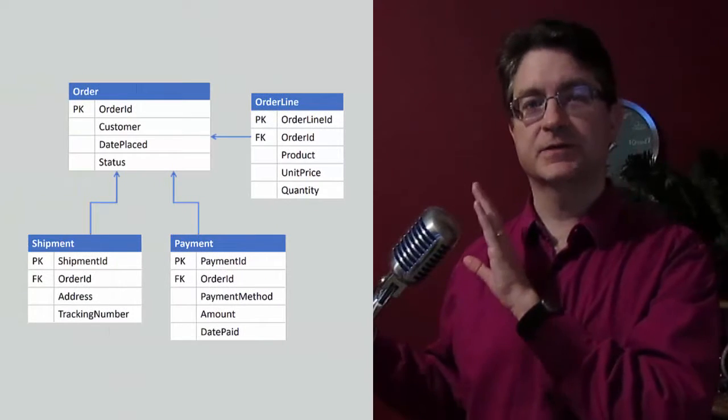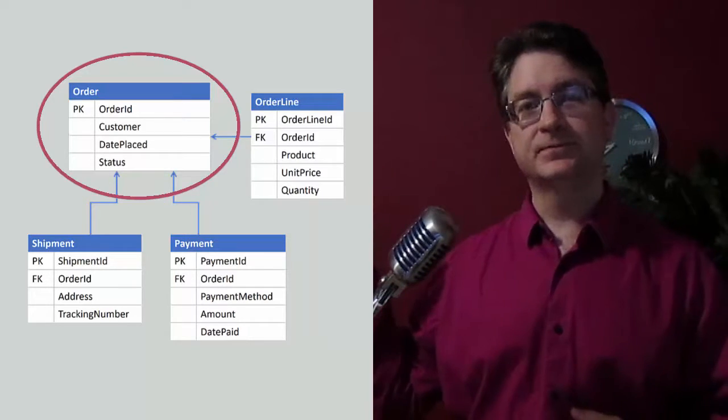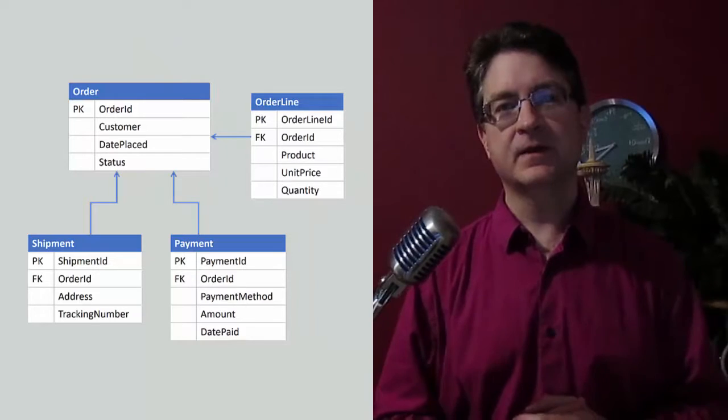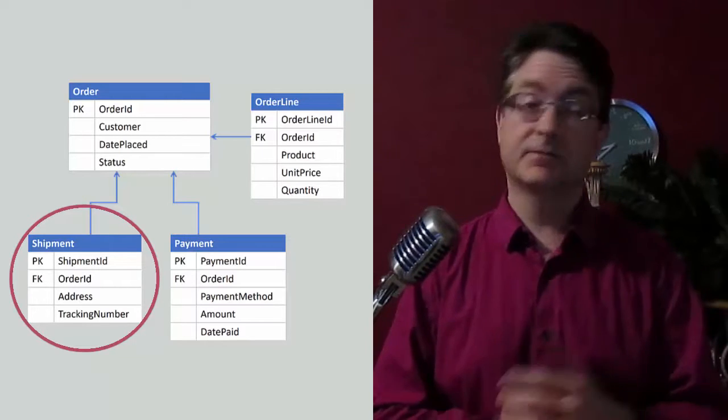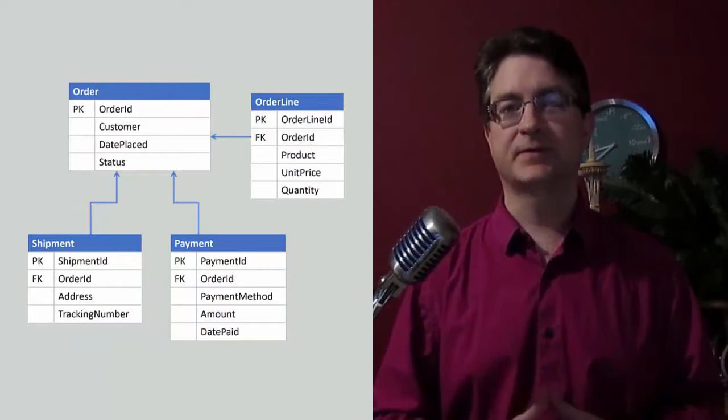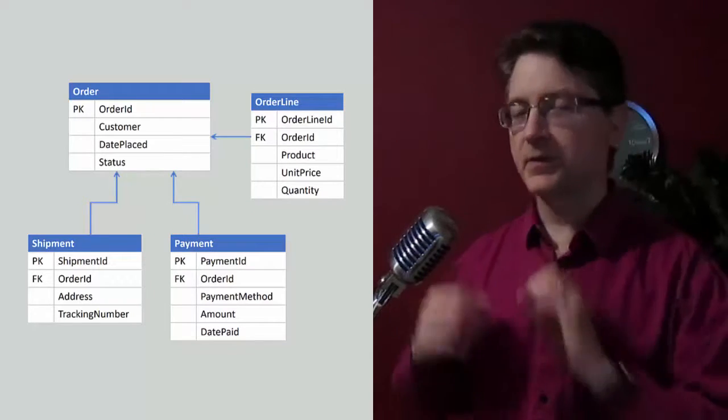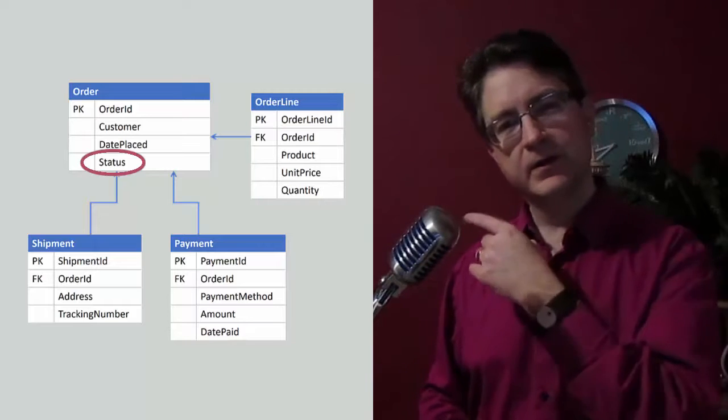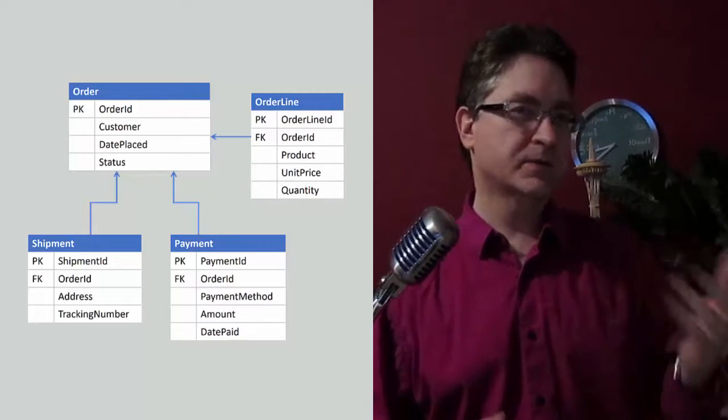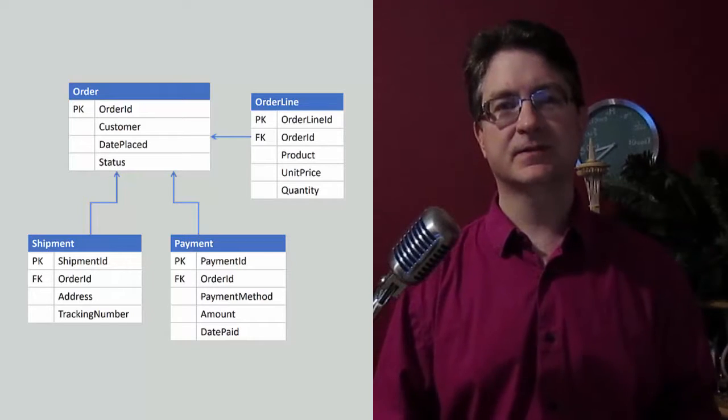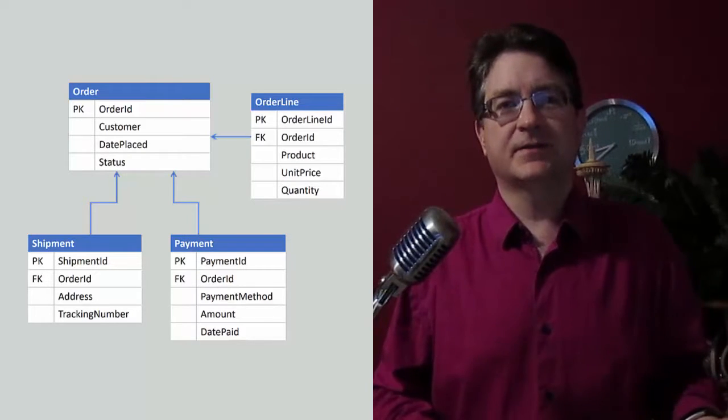So here we have a software system that is an ordering system built using a relational database. So we've got our order table, and we've got order lines associated with that order. And then we've got shipments and payments. So whenever an order is shipped, we're going to capture things like the tracking number and the address to which the order was shipped. When we receive payment for that order, we'll keep track of the amount and the payment method. So we've got all that information in our relational database. Notice right here, we also have a status column on the order. And so what we traditionally do in your typical database application is whenever something changes within the system, and you want to update the status of the order, you just go ahead and update this column right here.